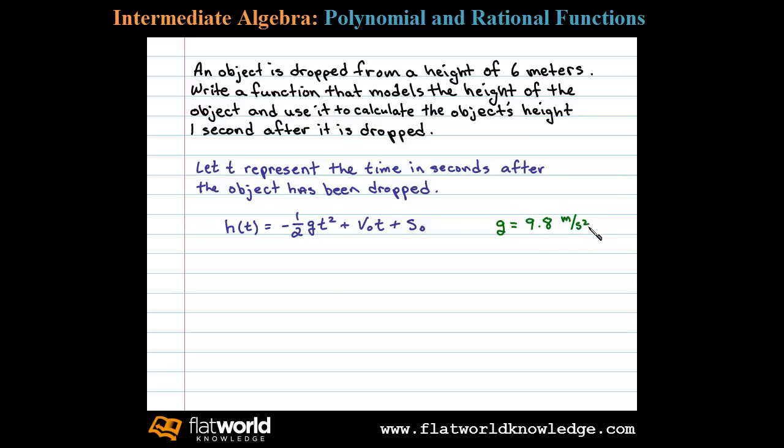Now v naught represents the initial velocity, and because the object is dropped, the initial velocity here is 0 meters per second.